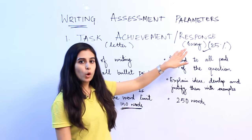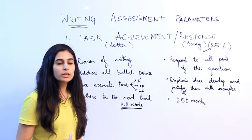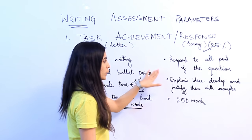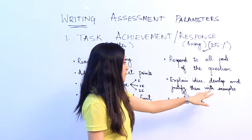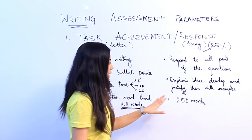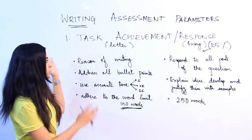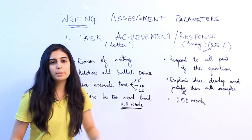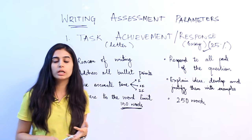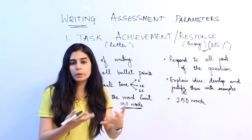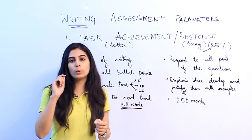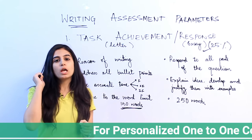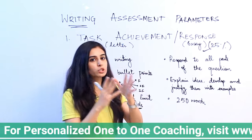Next is task response in the case of essay writing, which also carries a weightage of 25%. The key factors are: respond to all parts of the question, explain and develop ideas and justify them with examples, and write at least 250 words. You have to respond to all parts — whether it's giving your opinion, agreeing or disagreeing, or discussing advantages and disadvantages. Focus on what the question asks you to do and address that.